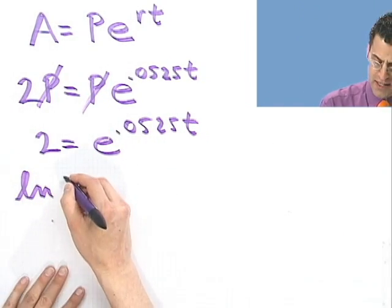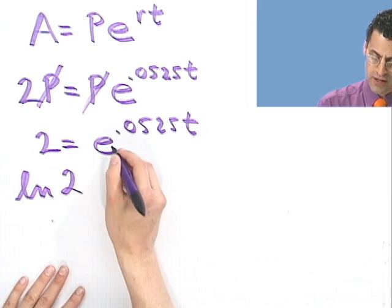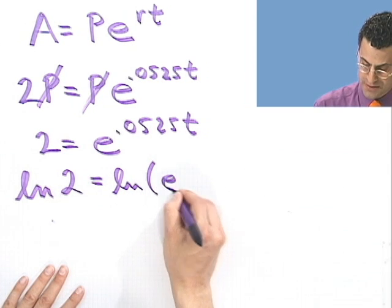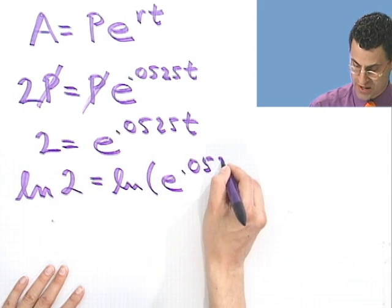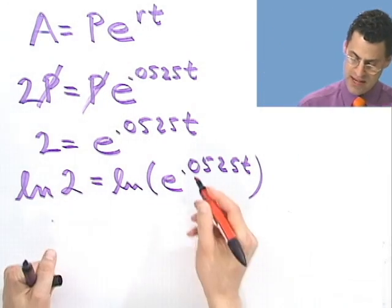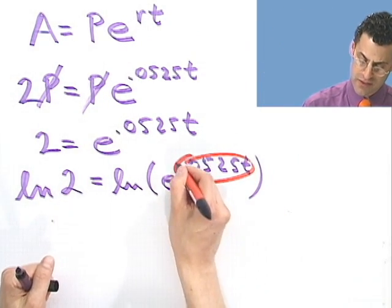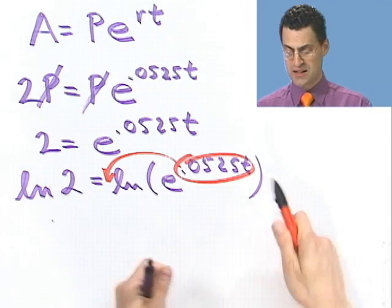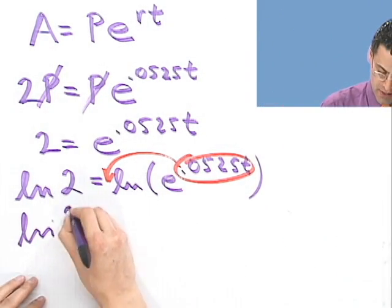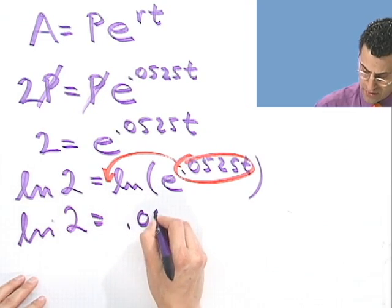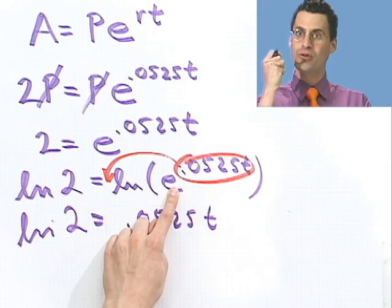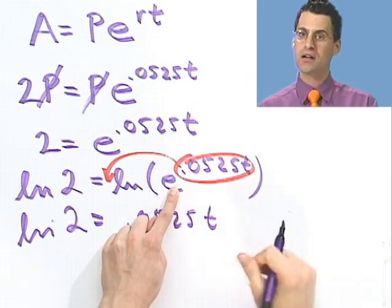By the way, you could take any log you want of both sides. But the natural log will feed off the e very nicely. And so it'll simplify. So that's why I take natural logs. And now the whole point of this is that using laws of exponents inside of logarithms, that becomes a coefficient. And so now my unknown now becomes on the ground level. And I see the natural log of 2 equals .0525t times the natural log of e. And that's the whole greatness about using the natural log versus any other log.